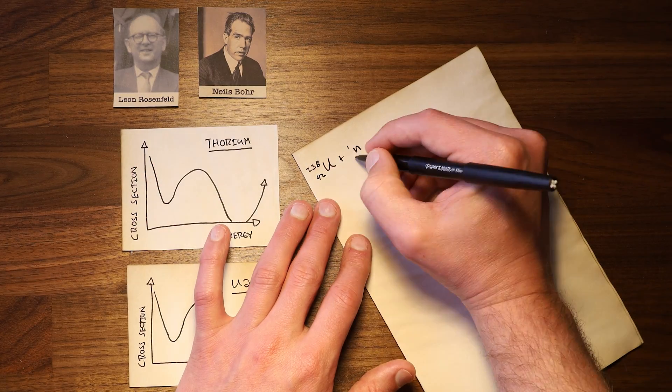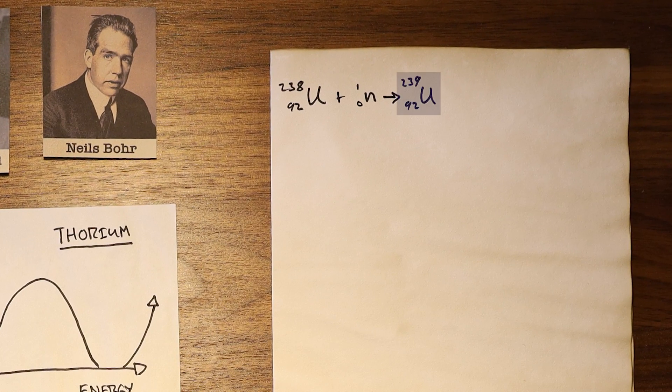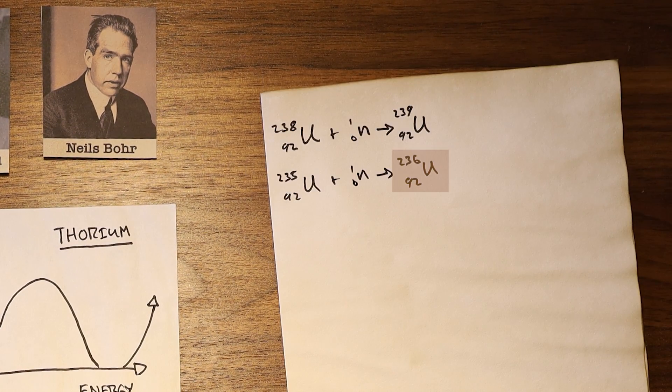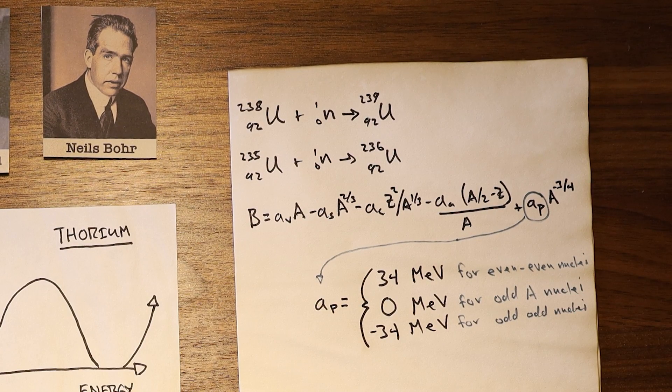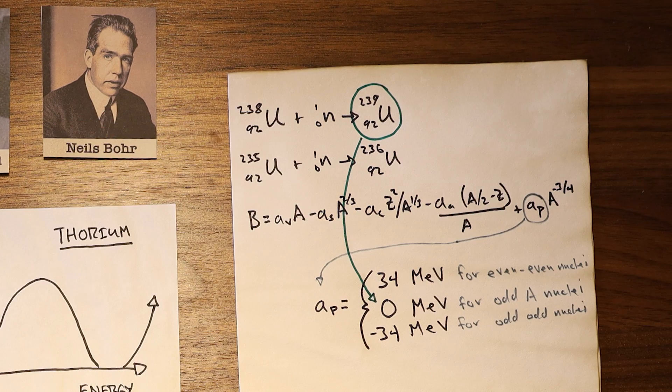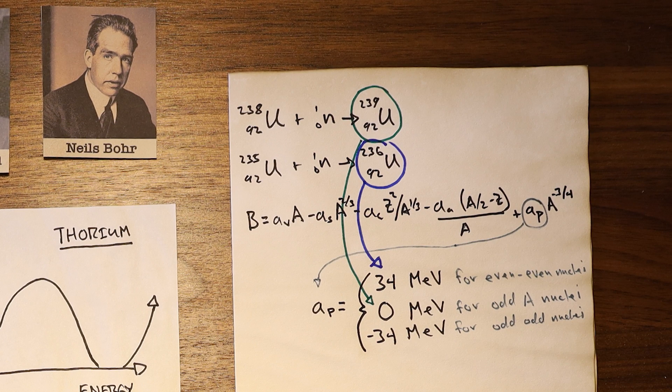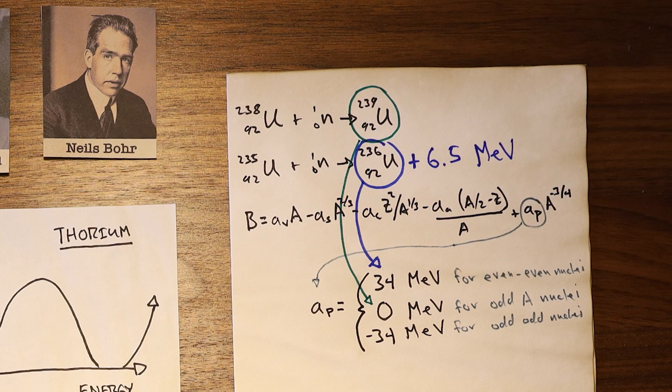When absorbing the incoming neutron, uranium-238 ends up with an odd number of neutrons, while uranium-235 ends up with an even number. As captured by the pairing term in Bohr's liquid drop model, an even number of neutrons means that all neutrons can form very stable pairs of overlapping wave functions. This additional binding energy in the configuration of uranium-236 means that absorbing the neutron releases around 6.5 extra mega electron volts of energy when entering this configuration.